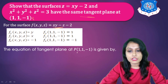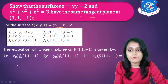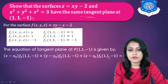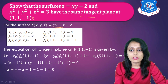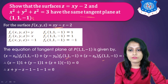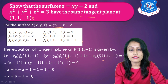The equation of tangent plane at (1, 1, −1) for the first surface is: (x − x₀)·Fx + (y − y₀)·Fy + (z − z₀)·Fz = 0. Substituting (x₀, y₀, z₀) = (1, 1, −1) and Fx = 1, Fy = 1, Fz = −1: (x − 1)·1 + (y − 1)·1 + (z + 1)·(−1) = 0. On simplification, the tangent plane is x + y − z = 3.